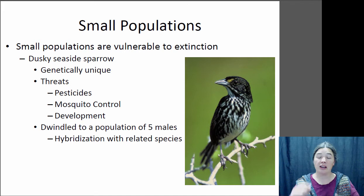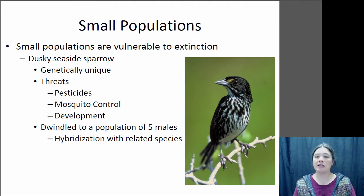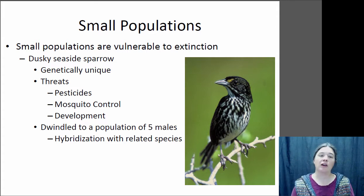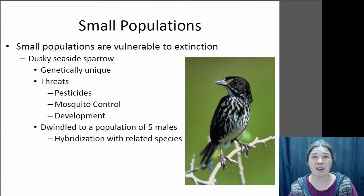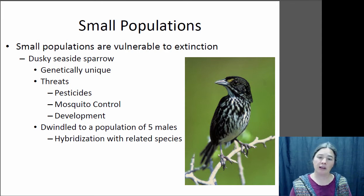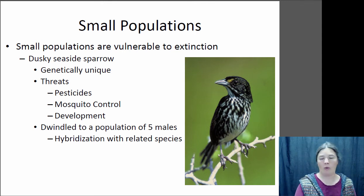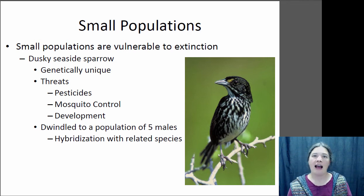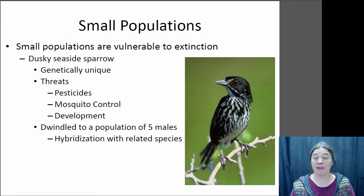Once you have a small population, it's even more vulnerable to extinction. The dusky seaside sparrow is a unique species found only in Florida. They were impacted by multiple human factors: pesticides sprayed to control mosquitoes, habitat destroyed by the development of Orlando, then a hurricane wiped out more individuals, then a highway was built. Eventually they were down to only five individuals left in the population — and they were all male. Once you have all males, that's it. The dusky seaside sparrow did go extinct. They did capture some of the remaining males and breed them with females of another species to try and preserve any unique genes they may have had.